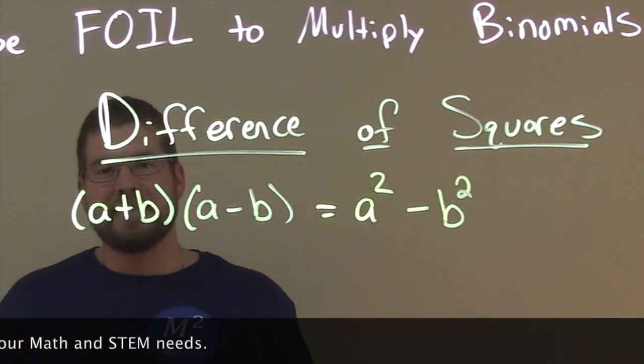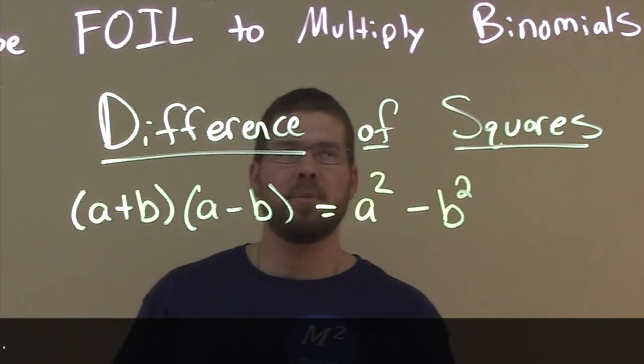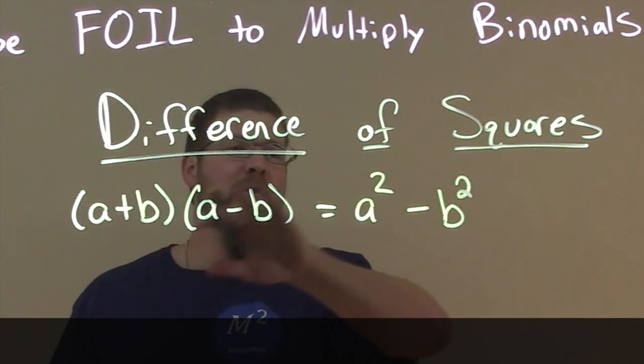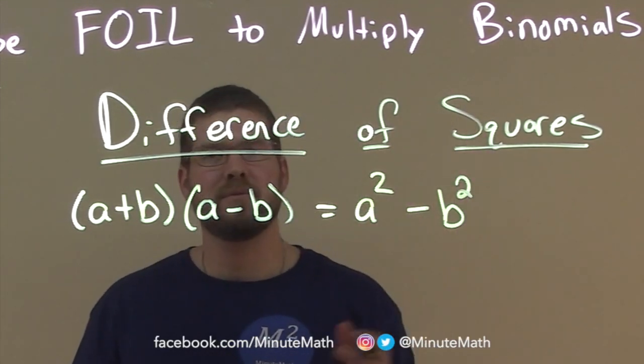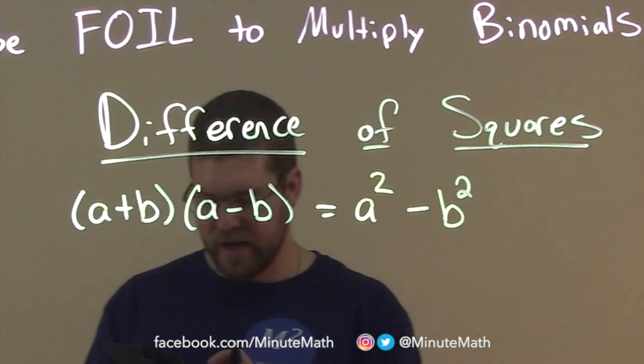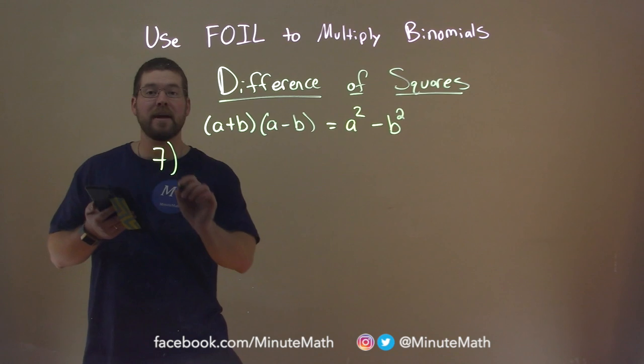It's a pretty simple way to make multiplying binomials faster. If you don't remember this formula, you can just use FOIL and it will still work. It just saves you some time. So let's go with an example and try it out.